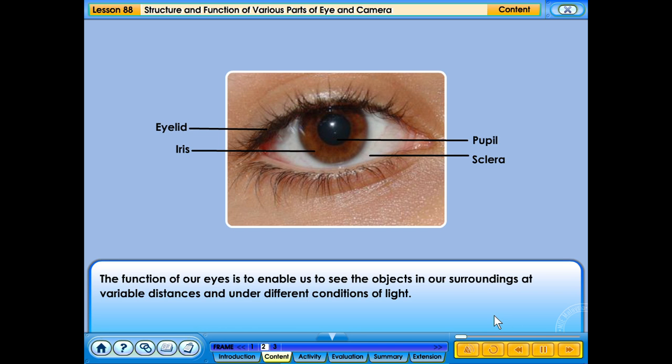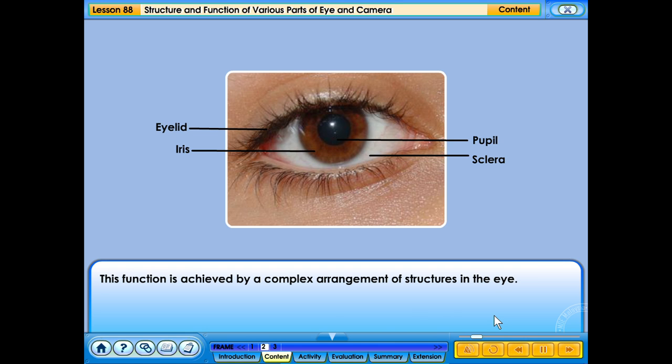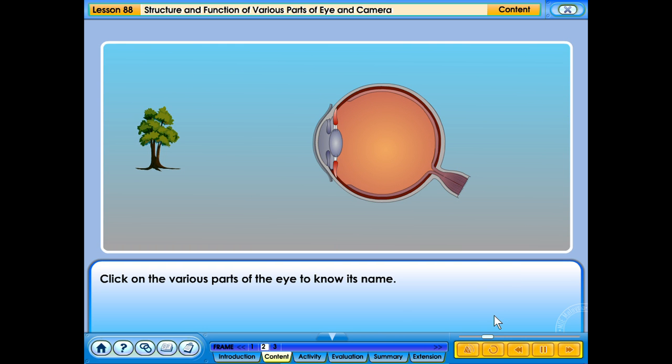The function of our eyes is to enable us to see the objects in our surroundings at variable distances and under different conditions of light. This function is achieved by a complex arrangement of structures in the eye. Click on the various parts of the eye to know its name.